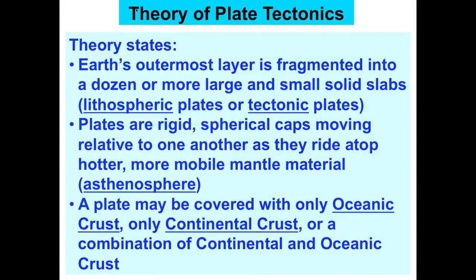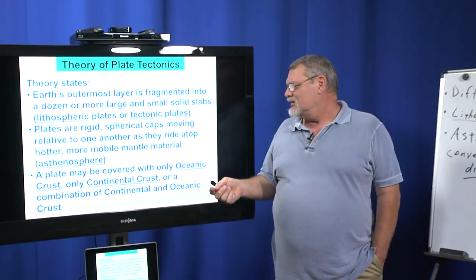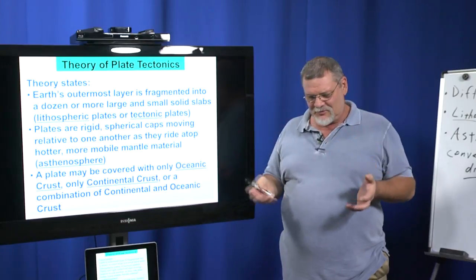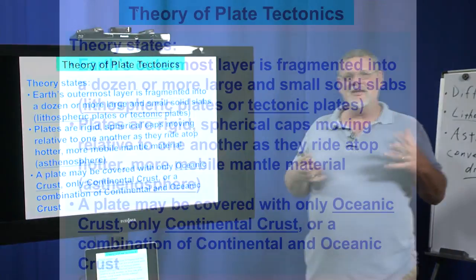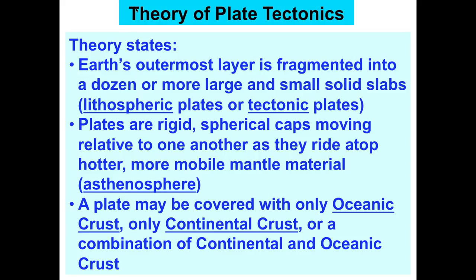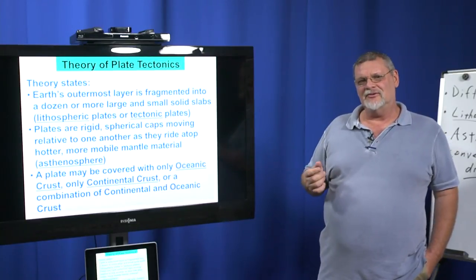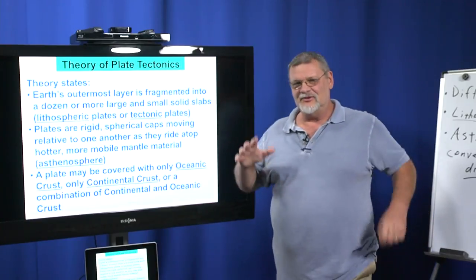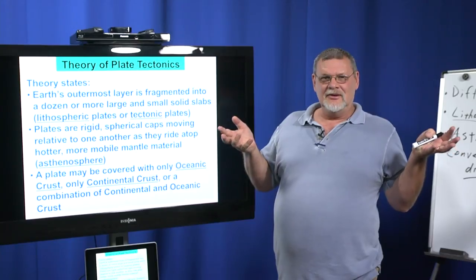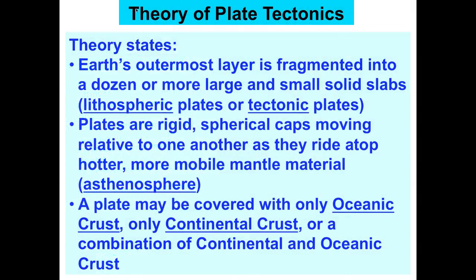So the theory of plate tectonics — what's a theory? It's the encompassing idea where, when we put all our ideas in one place and do experiment after experiment and it stands up over time, this is our way of thinking about a particular thing. When we look at the Earth, its crust, volcanoes, earthquakes, and continents, this is called the theory of plate tectonics. The theory states that the Earth's outermost layer is fragmented into a dozen or more large and small solid slabs — lithospheric plates, or tectonic plates.